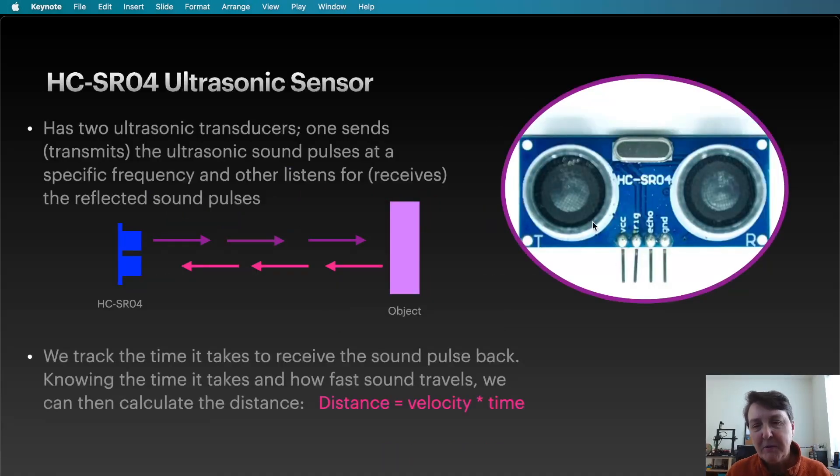Here's a picture of the ultrasonic sensor. It has four pins: a power pin, a ground pin, a trig, and an echo pin.